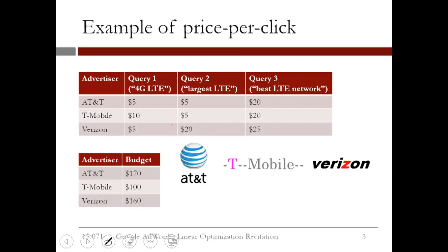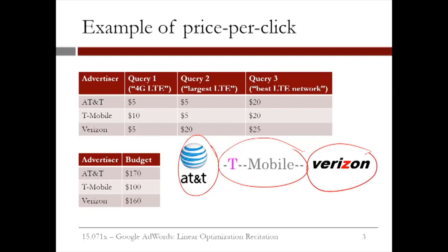Suppose that we are Google, and three of the major wireless service providers in the United States — AT&T, T-Mobile, and Verizon — come to us wanting to place ads on three different search queries: Query 1, which is 4G LTE; Query 2, which is largest LTE; and Query 3, which is best LTE network. If you're not familiar with these terms, 4G and LTE basically refer to different standards of high-speed wireless data communication.